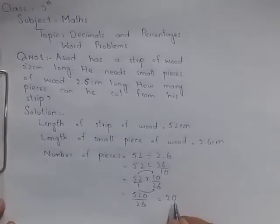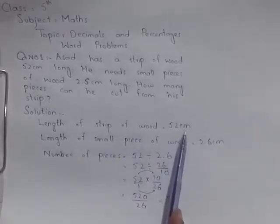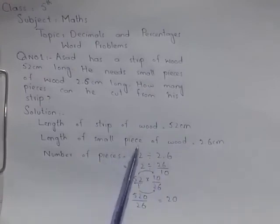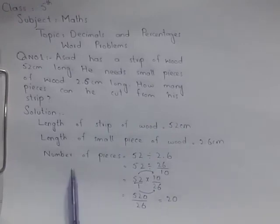Means ki agar hamare paas strip of wood 52 cm and we want to cut it in small pieces 2.6 cm, so we have the number of pieces which is 20. So students, in this way you have to solve these word problems. Good luck 5th class!